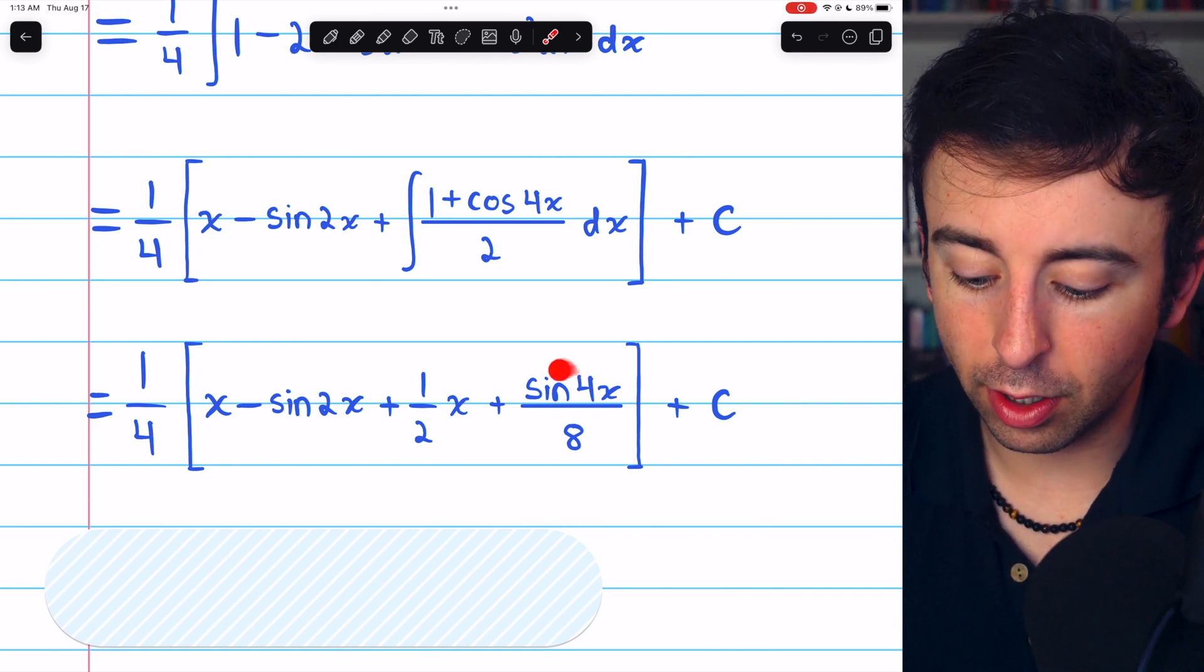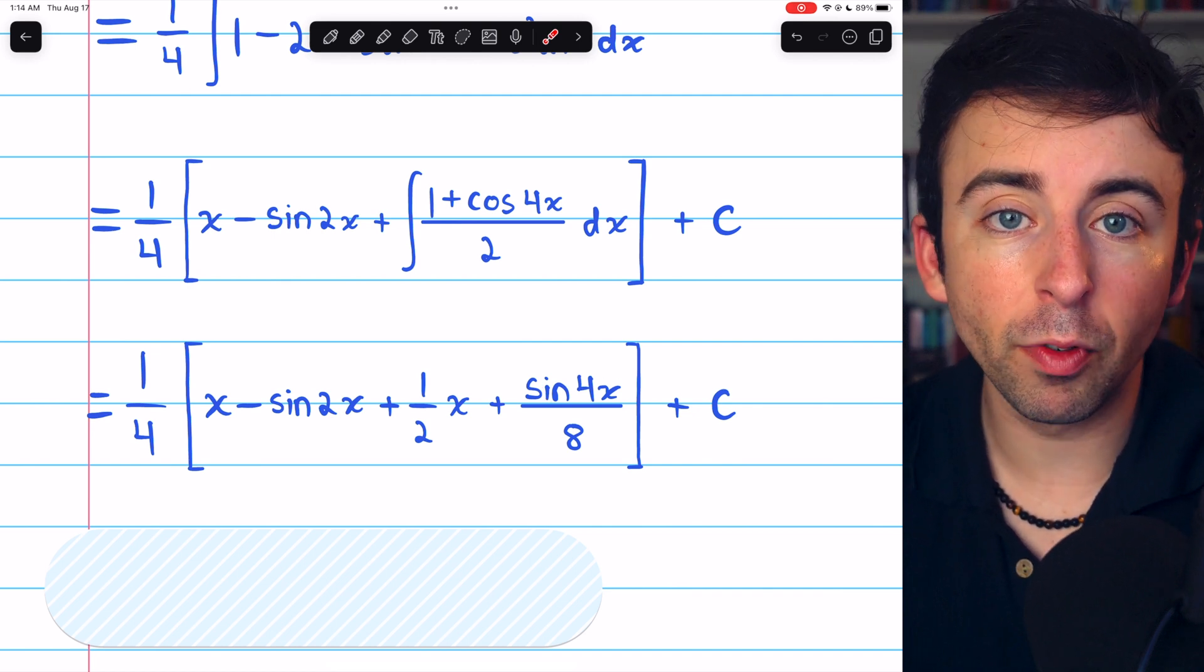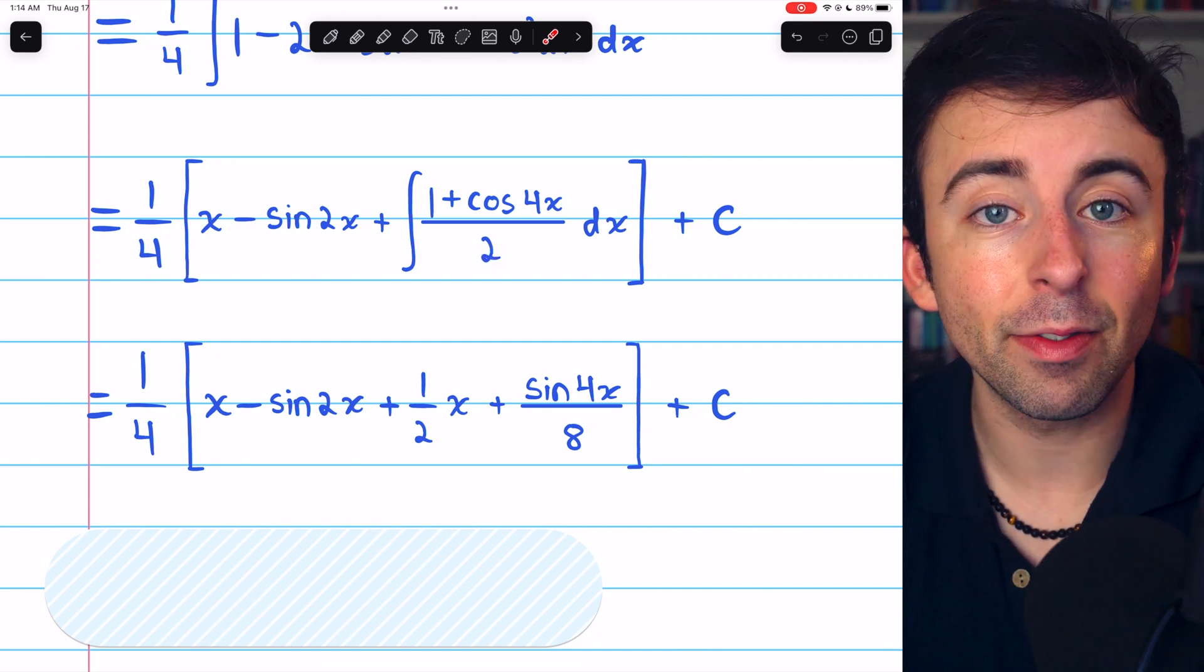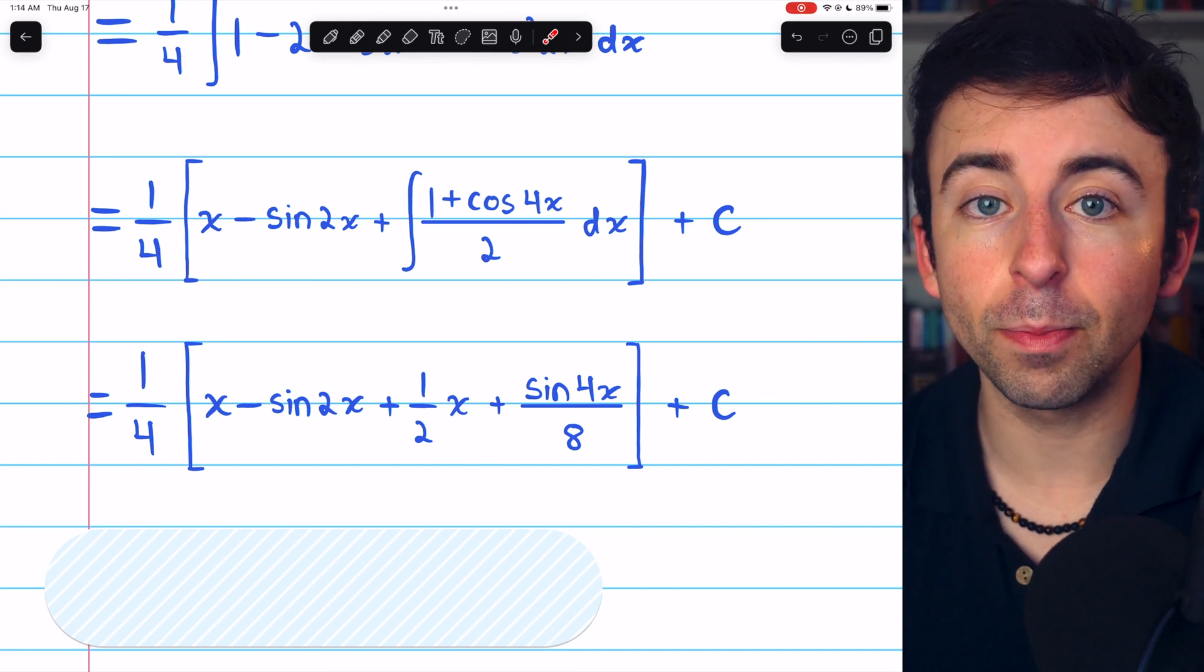You can see if we took the derivative of this, we'd get cosine of 4x, then we'd multiply by 4 by the chain rule, and the 4 over 8 would give us that factor of 2 in the denominator. And, of course, we still have the arbitrary constant plus c.